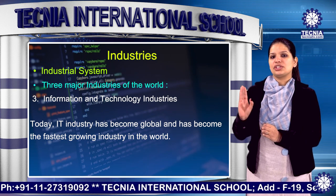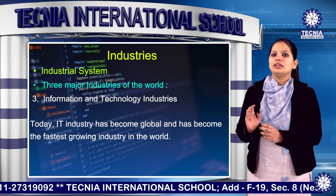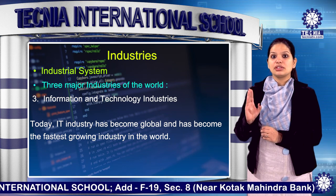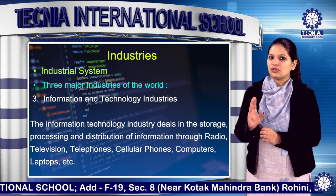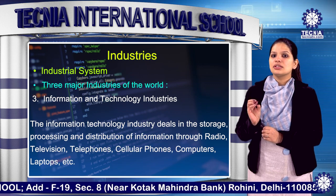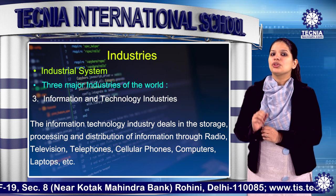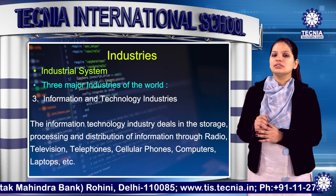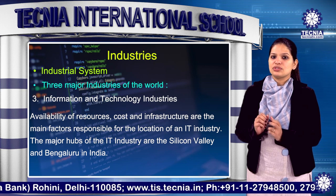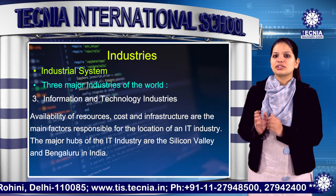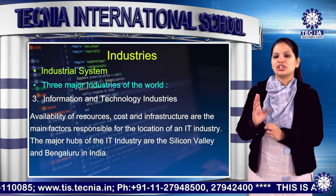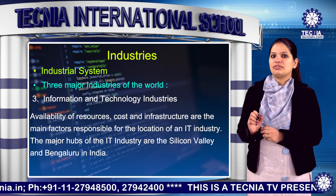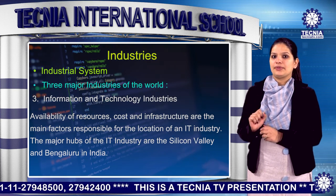The last major industry is information technology. Today, the information technology industry has become global and is the fastest growing industry in the world. The IT industry deals in the storage, processing and distribution of information via radio, television, telephones, cellular phones, computers, laptops, etc. Availability of resources, cost and infrastructure are the main factors responsible for the location of these industries. The major hubs of the IT industry are Silicon Valley and Bengaluru in India.